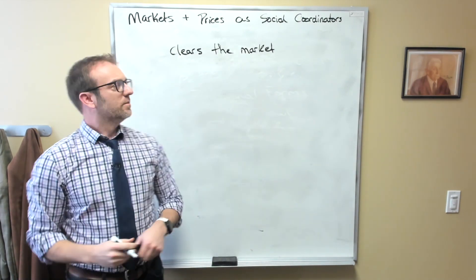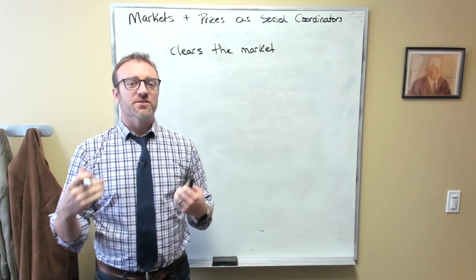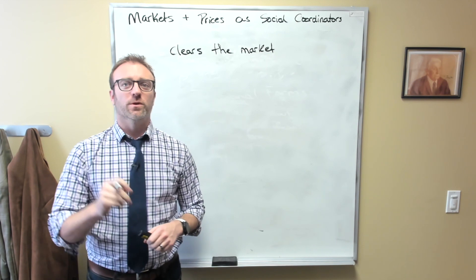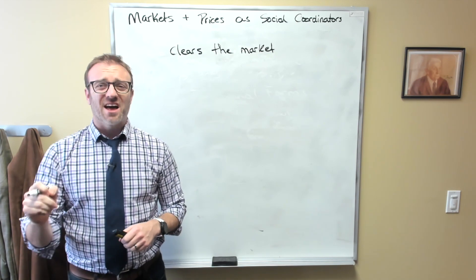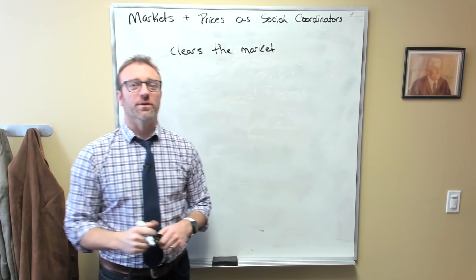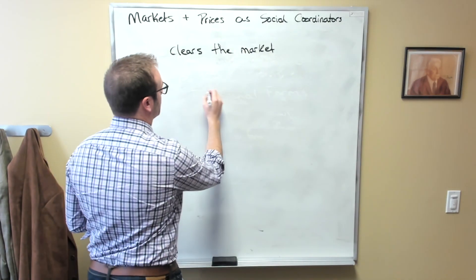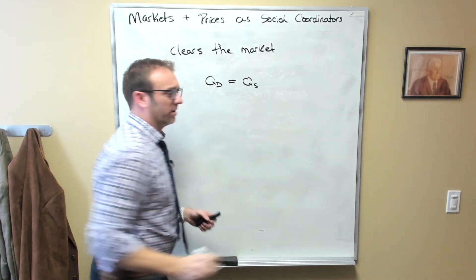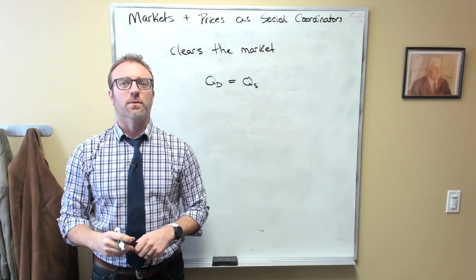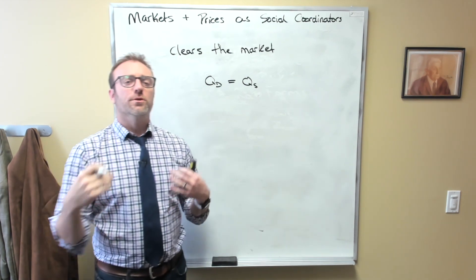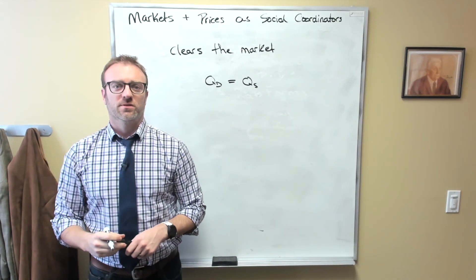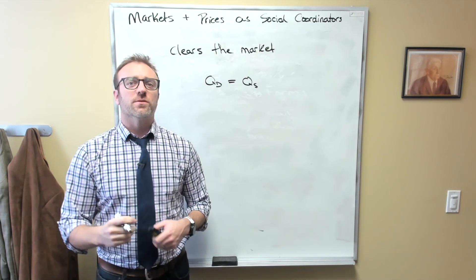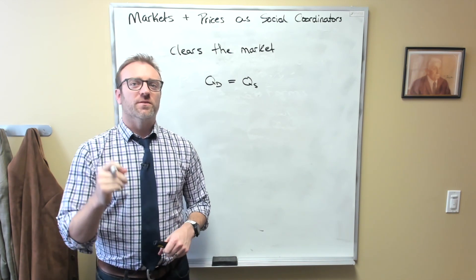Now what does it mean for a market to clear? A market is said to clear when the price of the good in question leads to the quantity that buyers wish to buy being exactly equal to the amount that producers are willing to produce. In other words, it's when the quantity demanded is exactly equal to the quantity supplied. So why is this important? Well, this is important because it means that we're not wasting resources.